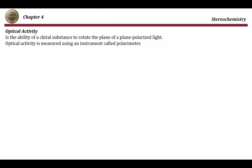In this video I will talk about the relationship between optical activity and chirality. Optical activity is the ability of a chiral substance to rotate the plane of plane-polarized light, and it is usually measured using an instrument called the polarimeter.